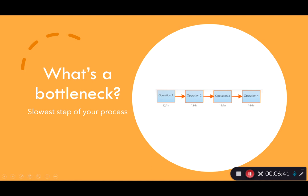Let's work through this. If operation one works at full speed processing 12 customers per hour, operation two can easily handle those 12 — it could actually handle 15 — so 12 flow through. But operation three can only process 11 customers per hour, so 12 come in, 11 get processed, and one customer sits in line. Then 11 customers per hour go through to operation four, which processes them. The entire capacity of the overall operation is limited by the bottleneck step.